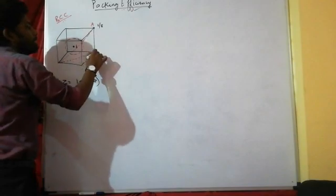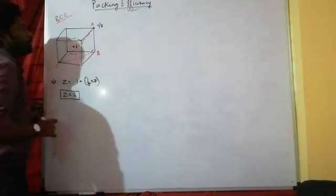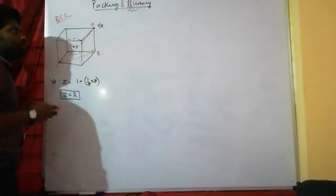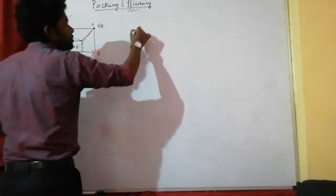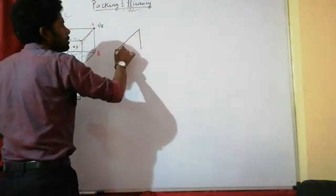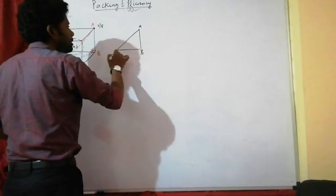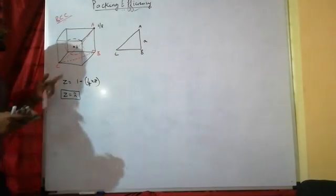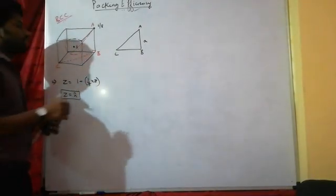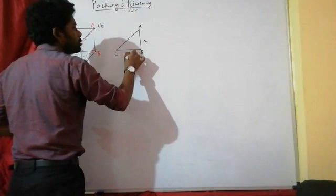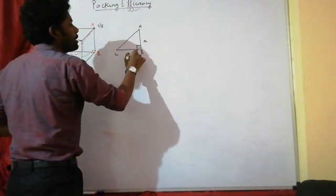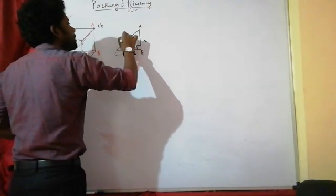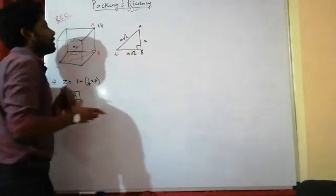Let the unit cell have corners A, B, and C. AB equals A (the edge length). BC is the face diagonal, so BC equals A√2. Here BC is perpendicular.